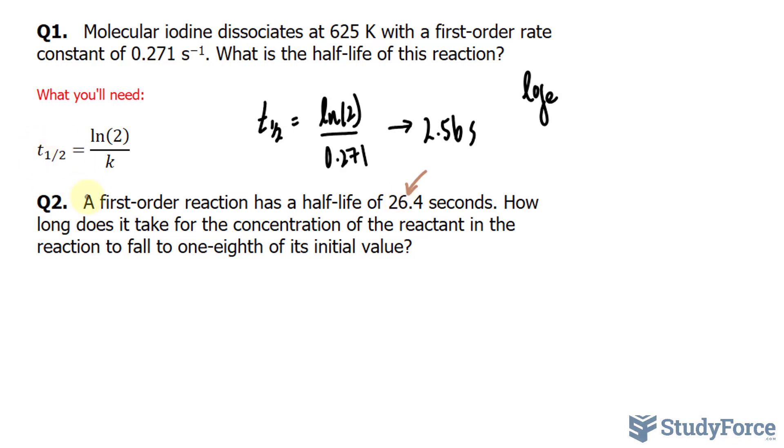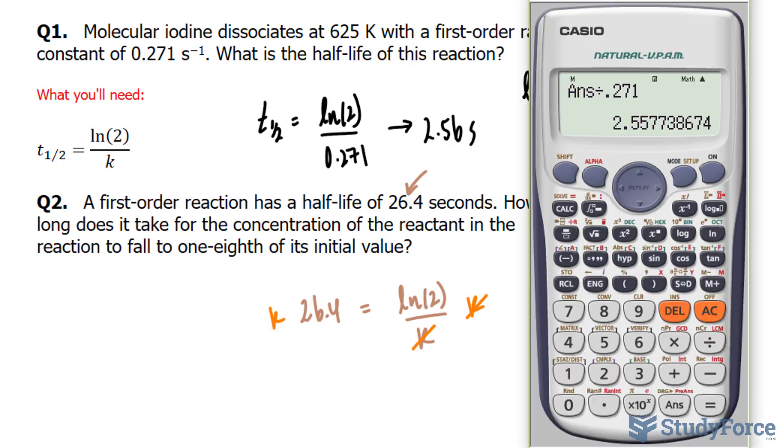And using the same formula as before, we can actually find the constant. Finding the constant is important. So I'll write down 26.4 is equal to ln 2 over K. Rearranging for K, I'll multiply both sides by K and then subsequently divide both sides by 26.4. So ln 2 divided by 26.4 and we end up with 0.02625.